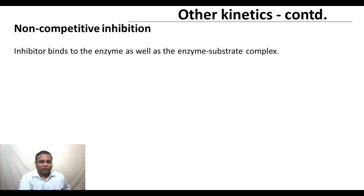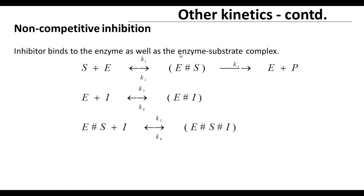The next type of inhibition — the earlier one was competitive — this second one is called non-competitive inhibition. In the non-competitive inhibition case, the inhibitor binds to the enzyme as well as the enzyme-substrate complex. The scheme is: the first reaction S + E reversibly gives ES, which irreversibly gives E + P. The enzyme also binds to the inhibitor to give the enzyme-inhibitor complex, and the enzyme-substrate complex also binds to the inhibitor reversibly to give the enzyme-substrate-inhibitor complex. In non-competitive inhibition, the inhibitor binds to both the enzyme and the enzyme-substrate complex.